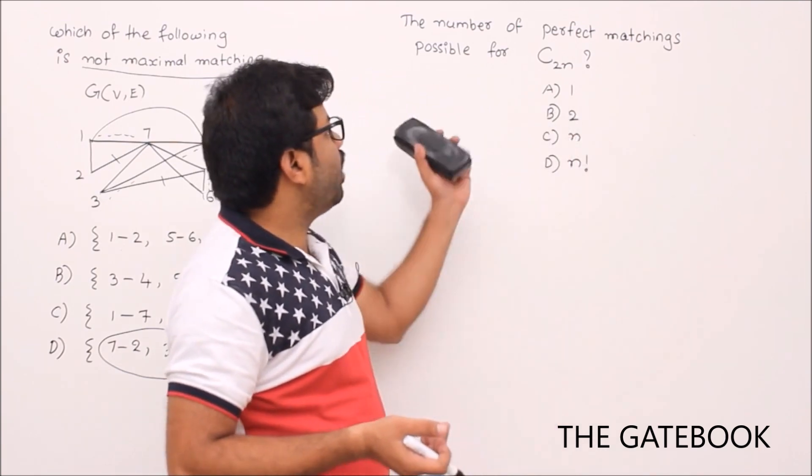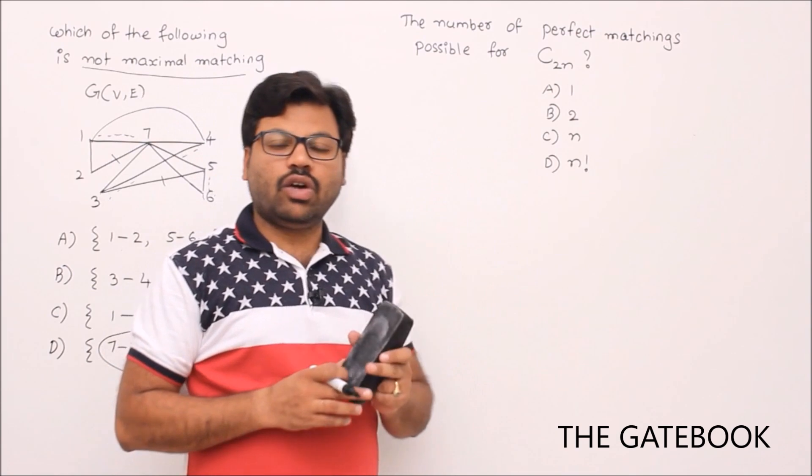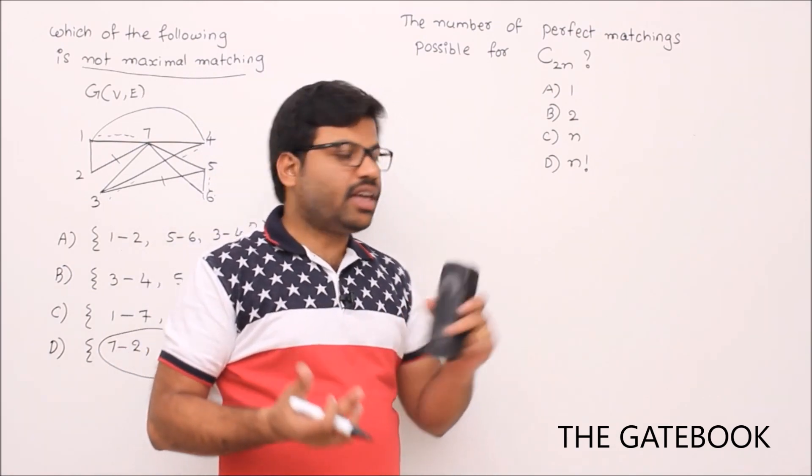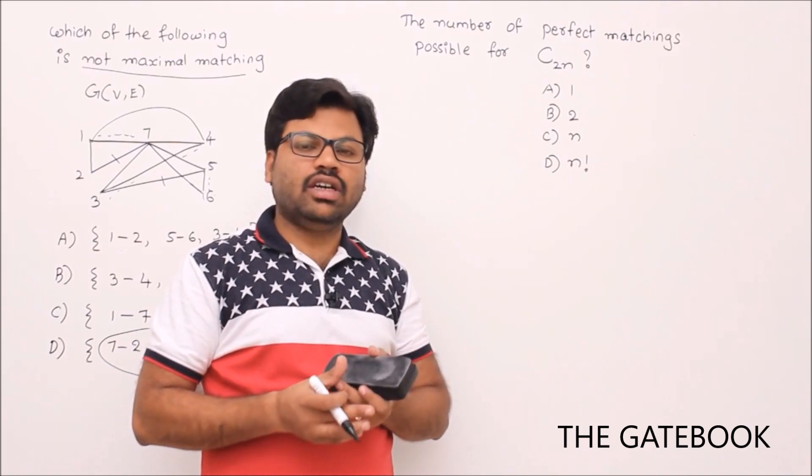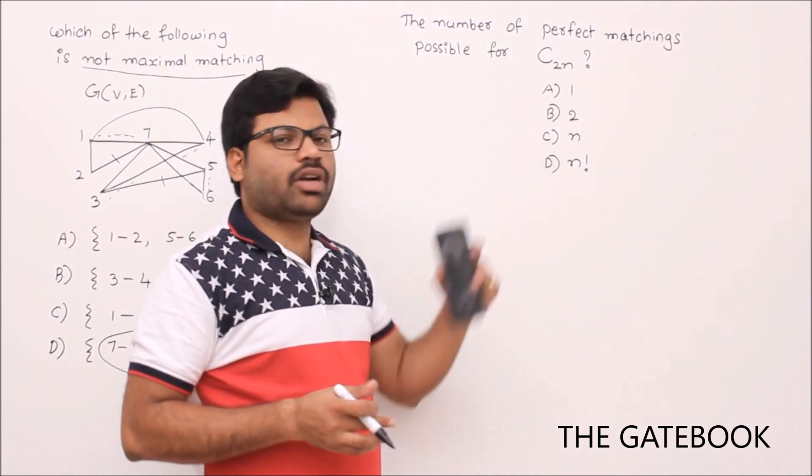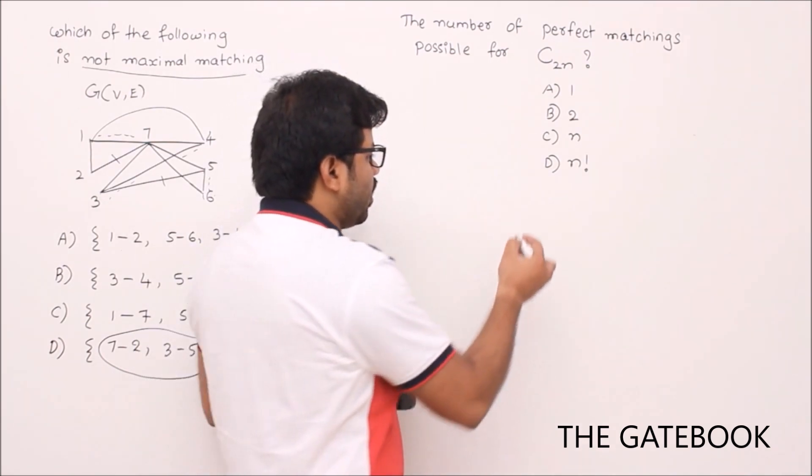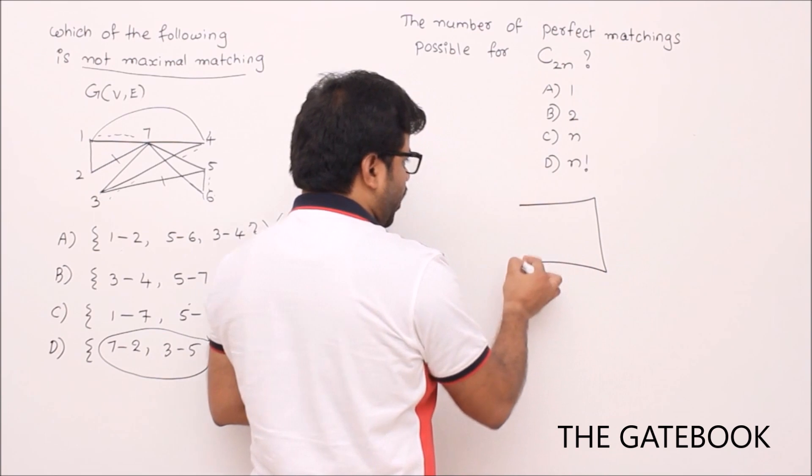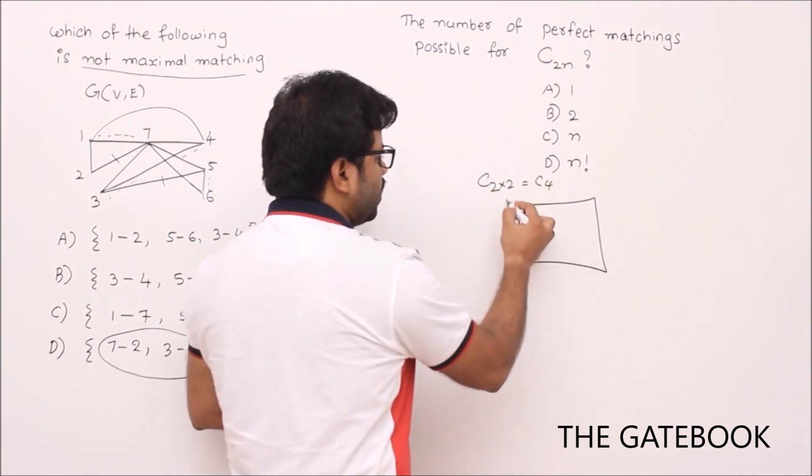Now we'll see one more question: the number of perfect matchings for a cycle graph with 2n vertices. Why 2n is given? To make that cycle graph an even graph, that means it's a graph with even number of vertices. Why? If you have odd number of vertices in a graph you can't have perfect matching, right? The question is all about number of perfect matchings. Let's focus on C_2,2 - that means C_4. In C_4 there are 4 vertices.